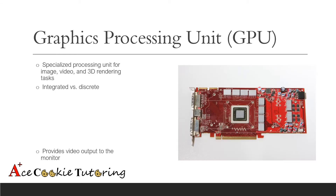The next major part of the computer is the graphics processing unit, also called the GPU. It's a specialized processing unit for image, video, and 3D rendering tasks. It basically assists the CPU on these particular tasks because they require a lot of processing. There are two types of graphics processing units: integrated and discrete. Integrated graphics processors are built into the CPU — on the same chip — and these are very common in non-gaming laptops. They're not super powerful, but they're power efficient, simple, and easy to build into laptops.